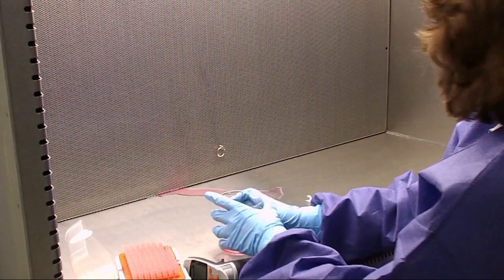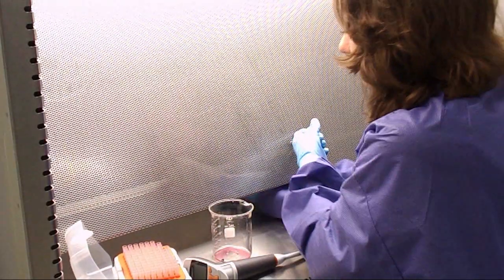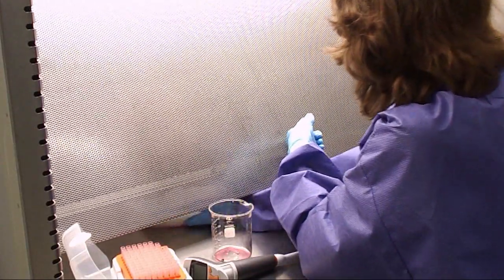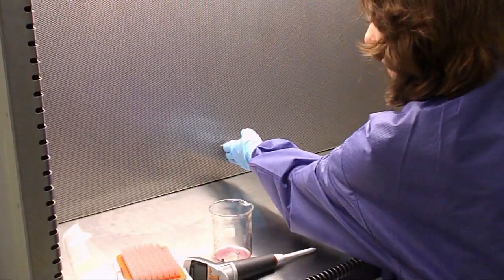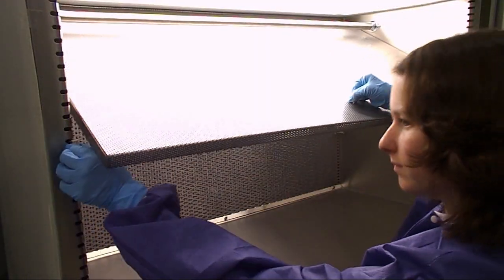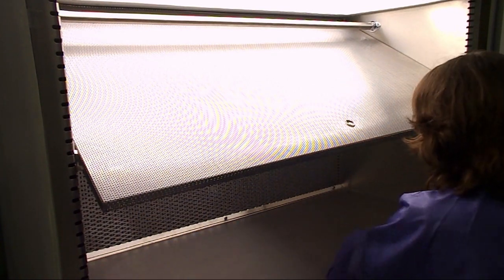The diffuser option is easy to install on your existing EdgeGuard HF clean bench and still provides easy access for cleaning. Simply lift the diffuser to wipe small spills. For more thorough disinfection, the diffuser easily latches to the front of the clean bench, giving you full access to the entire work surface.